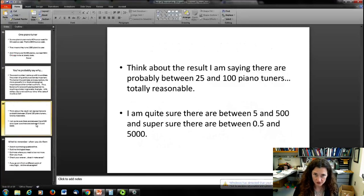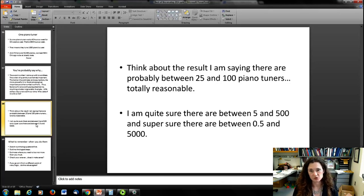If you think about the result, if I say 50, then what I mean is that there's probably between 25 and 100, which is pretty reasonable for a city like Chicago. Then I'm super sure that there's between 5 and 500—I've got it within two orders of magnitude. Then I'm super super sure that I've got it within three orders of magnitude, so there's definitely going to be between 0.5 and 5,000 piano tuners in the city of Chicago. So you're kind of placing a confidence interval on it, if you will.